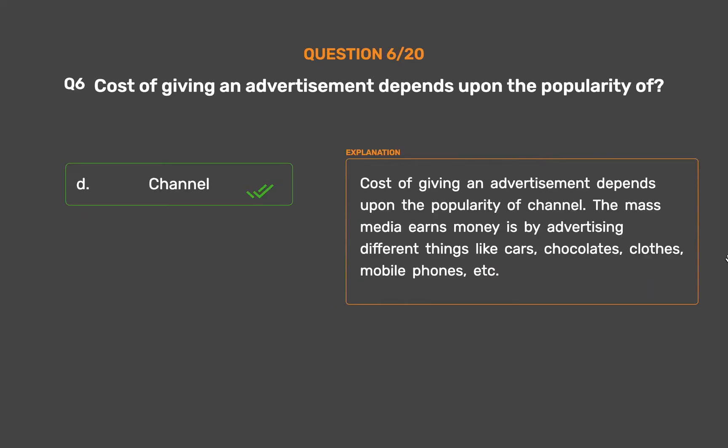Cost of giving an advertisement depends upon the popularity of the channel. The mass media earns money by advertising different things like cars, chocolates, clothes, mobile phones, etc.